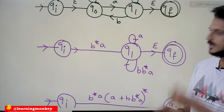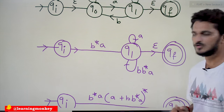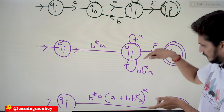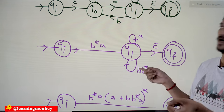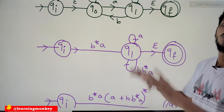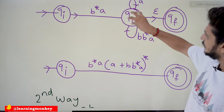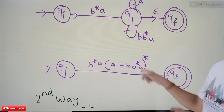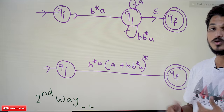Now eliminating Q1: from QI we reach Q1 via B*A. On Q1 we have the self-loop BB*A, and Q1 can also take A to stay on Q1. So we can stay on Q1 by taking either A or BB*A any number of times, written as (A|BB*A)*. The final regular expression is B*A(A|BB*A)*. This is the regular expression that generates the language of the given DFA.